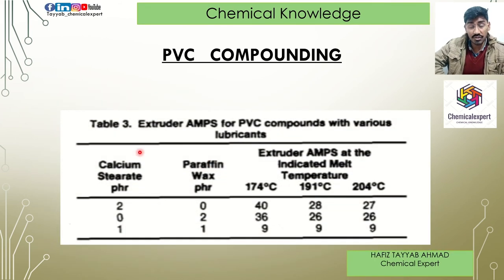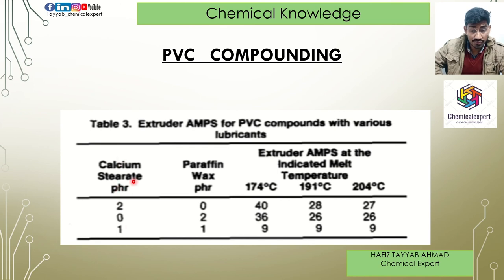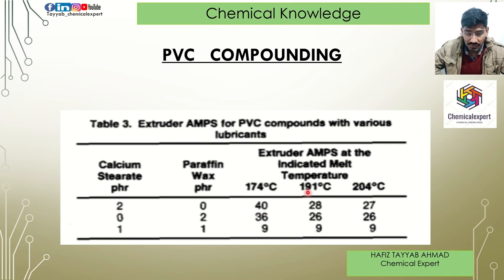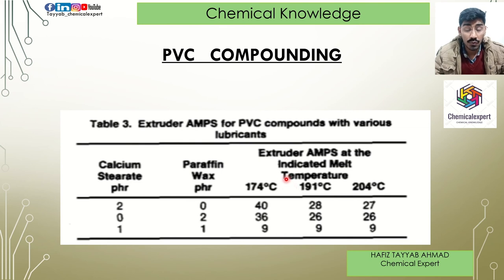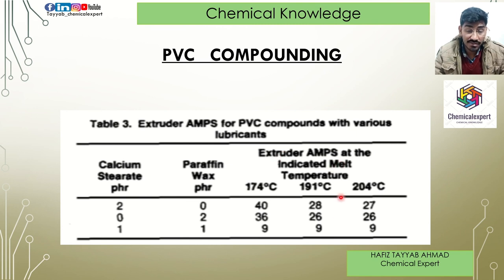Looking at the extrusion ampere data — ampere represents the load. At 2 phr of calcium stearate alone: 40 amperes at 140°C, 28 amperes at 191°C, 27 amperes at 204°C. With paraffin wax alone: 36, 27, 26, 26 amperes — both cases require high amperage and thus high electricity cost. But when combining 1 phr paraffin wax and 1 phr calcium stearate, only 9 amperes of extrusion load — which is excellent, improving product quality and extending the life of the screw and extruder.